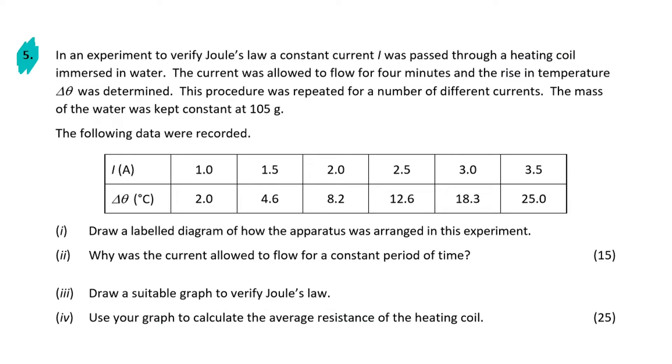Looking at question 5, we are told that a heating coil is immersed in water and a constant current I was passed through. Now this current I is going to be varied, as you can see in this part of the data table here, and this current was allowed to flow for 4 minutes, that's the time period I'm going to label as T. And a rise in temperature was determined, the process was repeated for a different number of currents, and the mass of the water was kept constant at 105 grams.